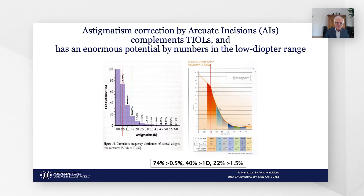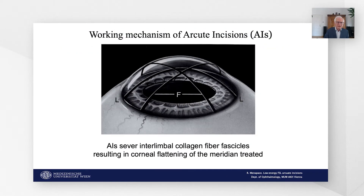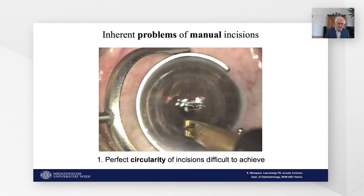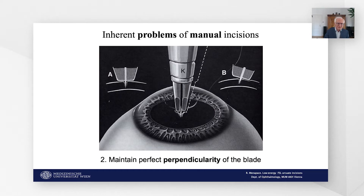About 38% of eyes have a corneal astigmatism of between 0.5 and 1 diopter, which does impair the visual performance of multifocal IOLs. Arcuate corneal incisions sever intralimbal collagen fascicles, resulting in flattening of the treated meridian. The inherent shortcomings of manual arcuate incisions are the difficulty to achieve perfect circular shaping and the difficulty to maintain perfect perpendicularity of the blade while cutting.